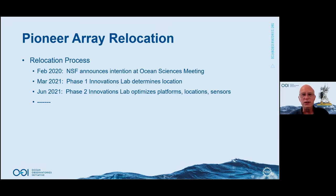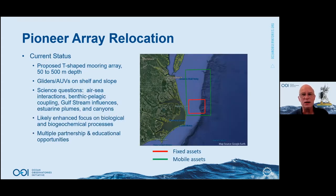The Pioneer Array is going to relocate — this was part of the original vision for OOI and was announced at the 2020 Ocean Sciences meeting. The first two phases were innovation labs, essentially community workshops that determined the location and proposed a conceptual design. The idea is to relocate the Pioneer Array just south of Virginia Beach and the Chesapeake Bay outflow on the continental shelf and slope, nominally as a T-shaped array spanning about 50 to 500 meters depth within a defined region, supplemented by gliders and AUVs.